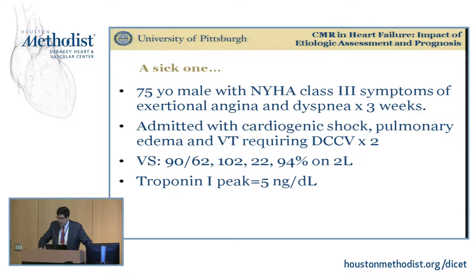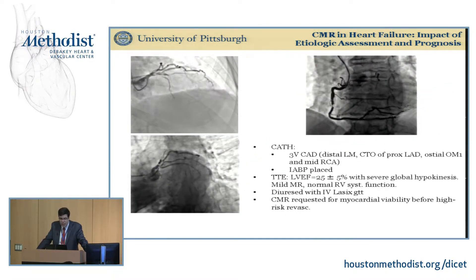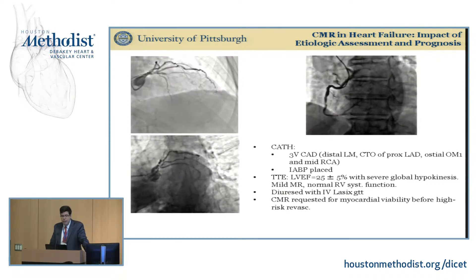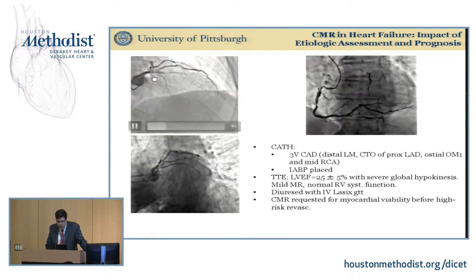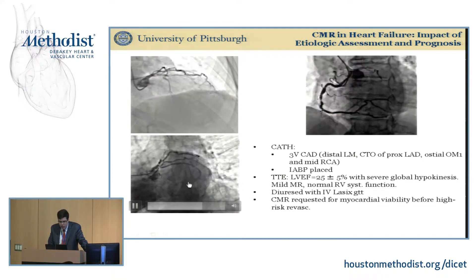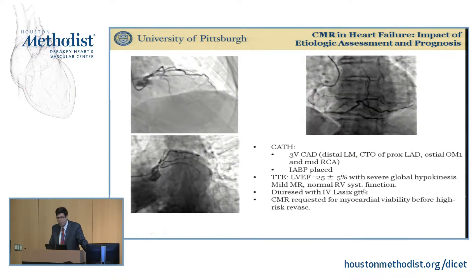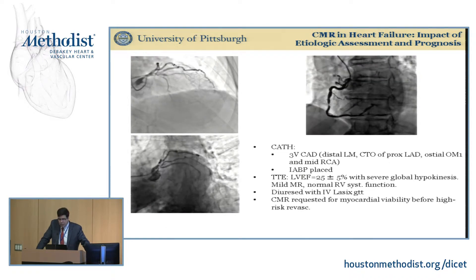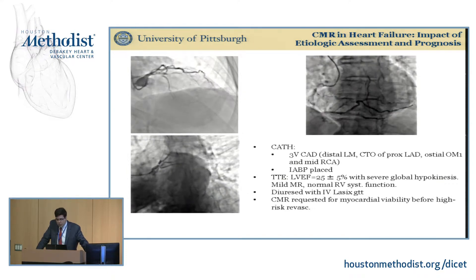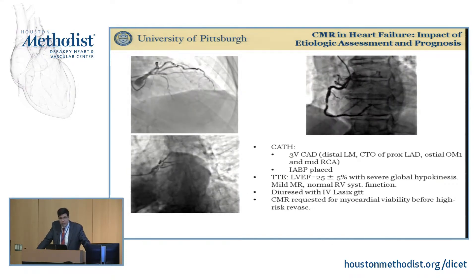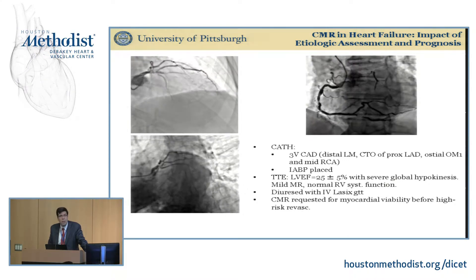A case from a couple of years ago: a 75-year-old male with NYHA Class III symptoms, exertional angina, and dyspnea for three weeks. He came in with cardiogenic shock, pulmonary edema, VT requiring cardioversion, low blood pressure, tachycardia, and a troponin of only five. Taken to the cath lab, he had very bad anatomy: proximal LAD chronic total occlusion, distal left main disease, OM occlusion, and mid-RCA occlusion. Ejection fraction was 25% with global hypokinesis and mild mitral regurgitation. After diuresis and optimization, a balloon pump was placed, and he was in the ICU for a couple of days. After this quasi-storm, he was sent to cardiac MRI to evaluate for myocardial viability before high-risk revascularization.